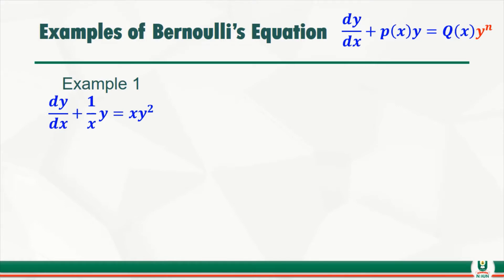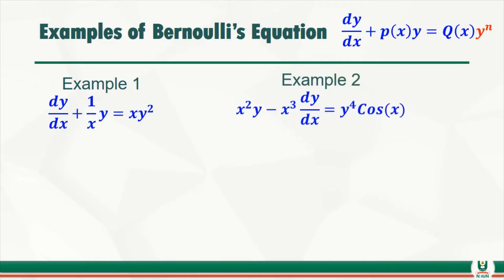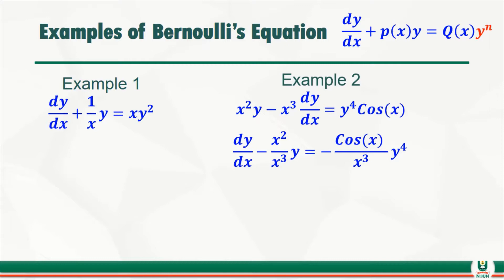Let's consider example one of Bernoulli. In this case, we have 1 over x as P(x), and here n equals 2, with y squared multiplying x in Q(x). In example two, you need to rearrange first. After rearranging, P(x) is 1 over x, Q(x) is cos(x) over x cubed, and n equals 4, so we have y raised to power 4.